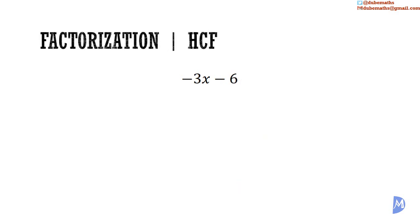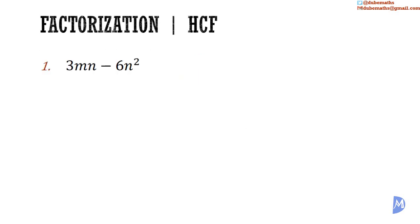The HCF of negative 3x and negative 6 is negative 3. What do I multiply negative 3 by to get negative 3x? x. And what do I multiply negative 3 by to get negative 6? Positive 2. So we have x added to positive 2, and thus we arrive back at what we started with.